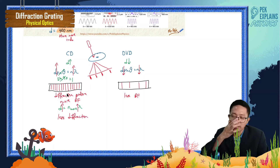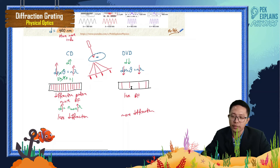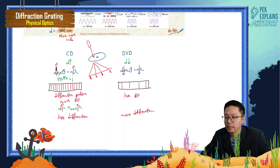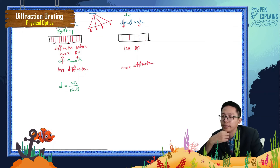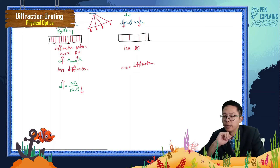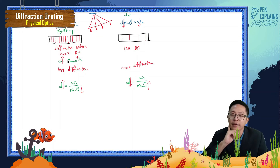But for DVD, it has a smaller D, which means more diffraction and a higher angle of diffraction, producing fewer orders of fringes. The formula becomes D = N_max × lambda over sine 90, which equals 1. So the bigger the D, the higher the maximum order it can form — you see more fringes. Smaller D means more diffraction — bigger angle of diffraction.